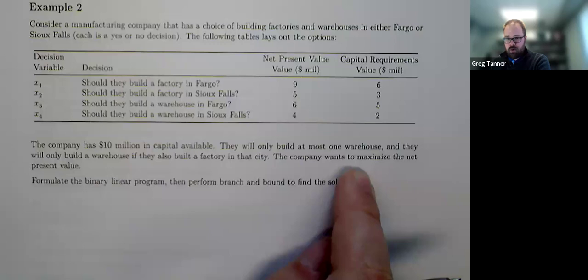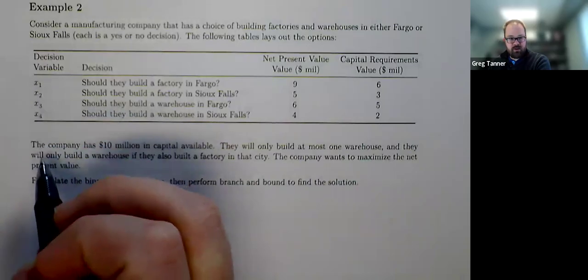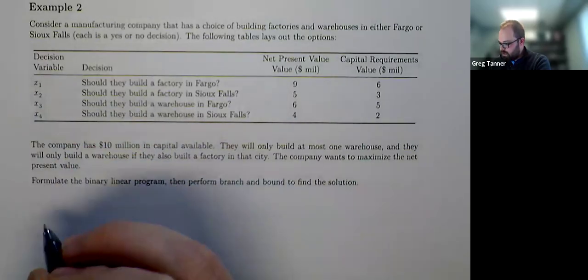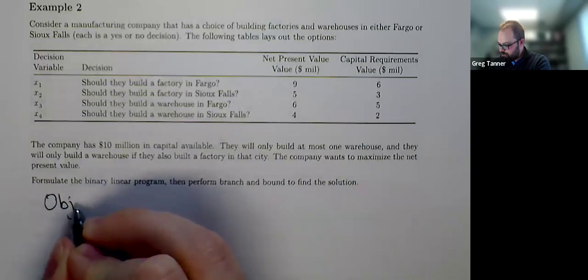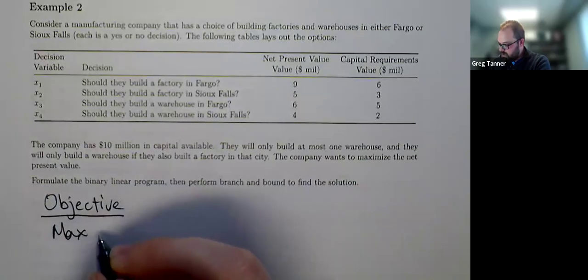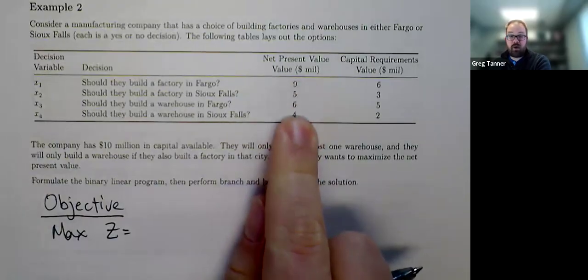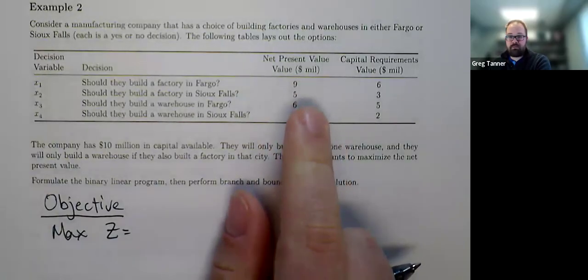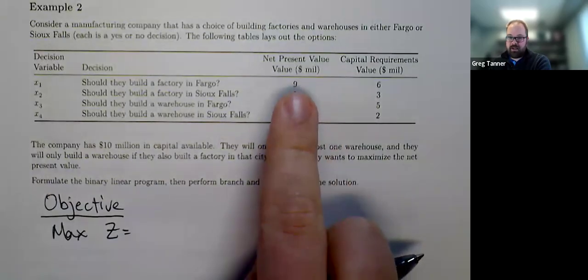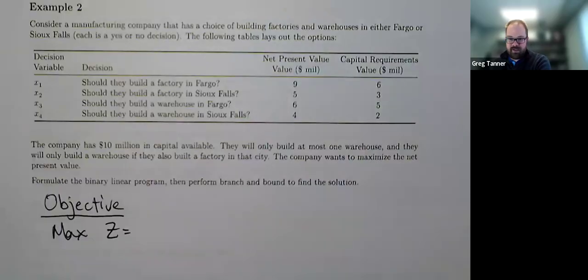So let's go ahead and formulate a linear program for this. Our decision variables are already laid out here for us. And so now let's jump into the objective. We want to maximize, we'll call it Z, that net present value. Here's the net present value for each of these. Since our decision variables are binary variables, if that binary variable is zero, we don't get the net present value. If it's one, we get all of that net present value. And so that's how we're considering these decisions: all or nothing, yes or no.